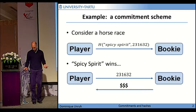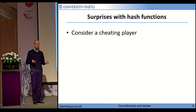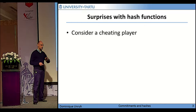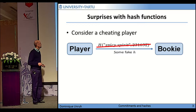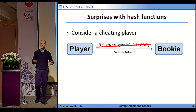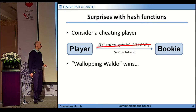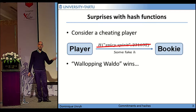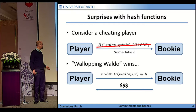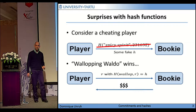And now we can ask ourselves: is this a secure protocol or not? Consider a cheating player. We are looking at the binding property now — the hiding property is not the topic of this talk. So could a cheating player instead of sending the hash of some horse name just send some fake value H, and later when some other horse wins — say Walloping Waldo — perform some algorithm to find an R so that the hash of Walloping Waldo and R equals the value H he sent earlier, and get paid? So this would be a typical attack.